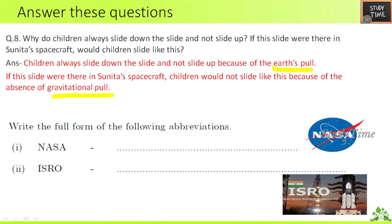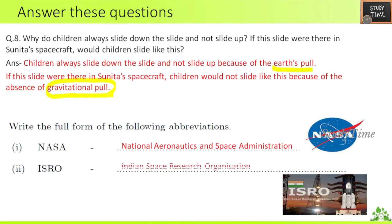In this lesson you should always think in terms of gravitational pull. Make sure you write the word 'gravity' with the correct spelling. Also write the full form of the following abbreviations: NASA — National Aeronautics and Space Administration. ISRO — Indian Space Research Organization.